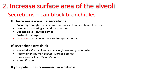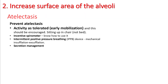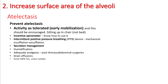Understand that humidification via nasal cannula through a bubbler does not always give you good humidification. If you really want good humidification, go with a high flow nasal cannula. If your patient has neuromuscular weakness, use a cough assist device and chest physical therapy. Secretion and atelectasis management is very important, and prevention is certainly better than cure. Avoid letting your patient lie in bed all day — activity is the best way to prevent atelectasis and mobilize secretions. Make sure your patient is moving around, sitting up in a chair rather than lying in bed. You can use an incentive spirometer and intermittent positive pressure breathing devices. Use humidification.